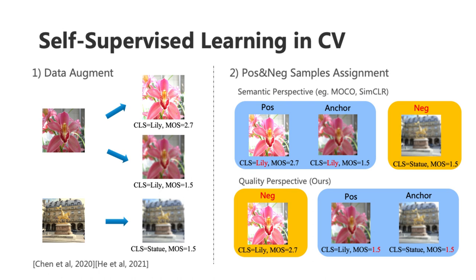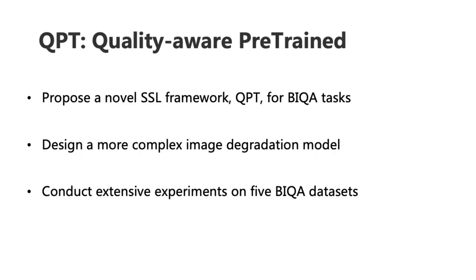In this work, we focus on self-supervised learning for image quality assessment to mitigate the paucity of labeled data. Take contrastive learning, for example — previous methods such as MoCo and SimCLR are designed to learn semantic-aware representations. However, it's not suitable for downstream image quality assessment problems. To solve the aim mismatch between pre-training and downstream fine-tuning, we introduce QPT, or quality-aware pre-training models.